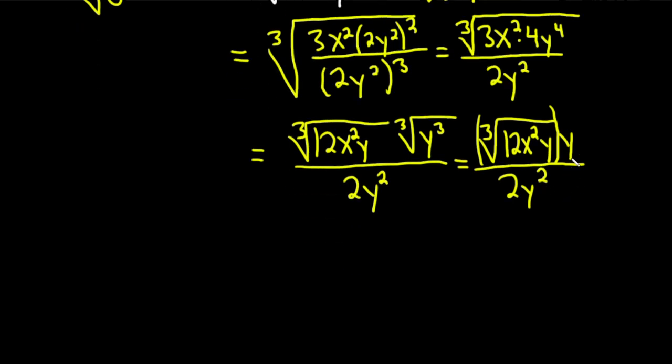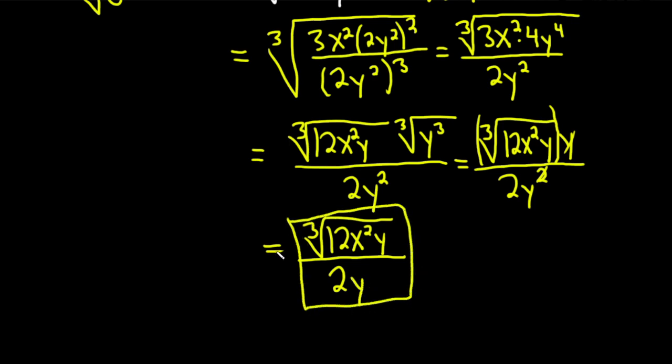And now you see that these cancel, so we have the cube root of 12x squared y over, and then these go away so we just get 2y. Wow, took a lot of work but that would be the final answer. I hope this video has been helpful.